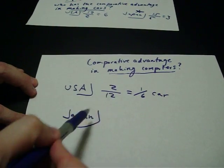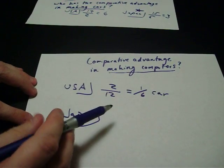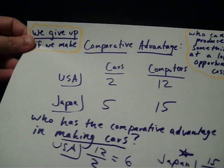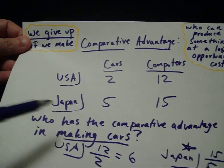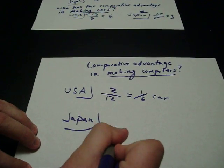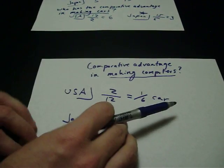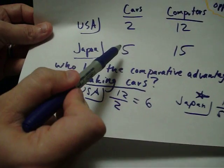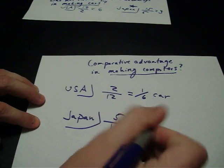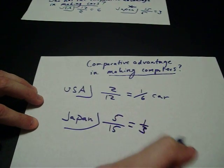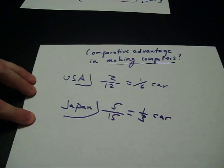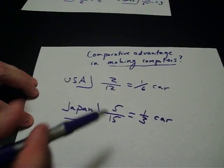For Japan, we give up over if we make. If Japan makes computers, they can make 15 — that is the denominator. What they give up is cars; Japan could produce 5 cars. So 5 over 15 reduces to 1/3 of a car, meaning for every computer they produce, they give up the production of 1/3 of a car.